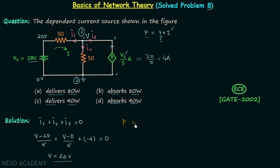Now we can calculate the power: 20 multiplied by 4 equals 80 watts. So options C and D are not correct. We now need to determine whether this 80 watts is being delivered or absorbed by the dependent current source.